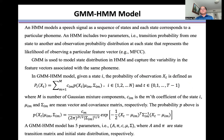An HMM includes two parameters, namely transition probability from one state to another, and observation probability distribution at each state that represents the likelihood of observing a particular feature vector.